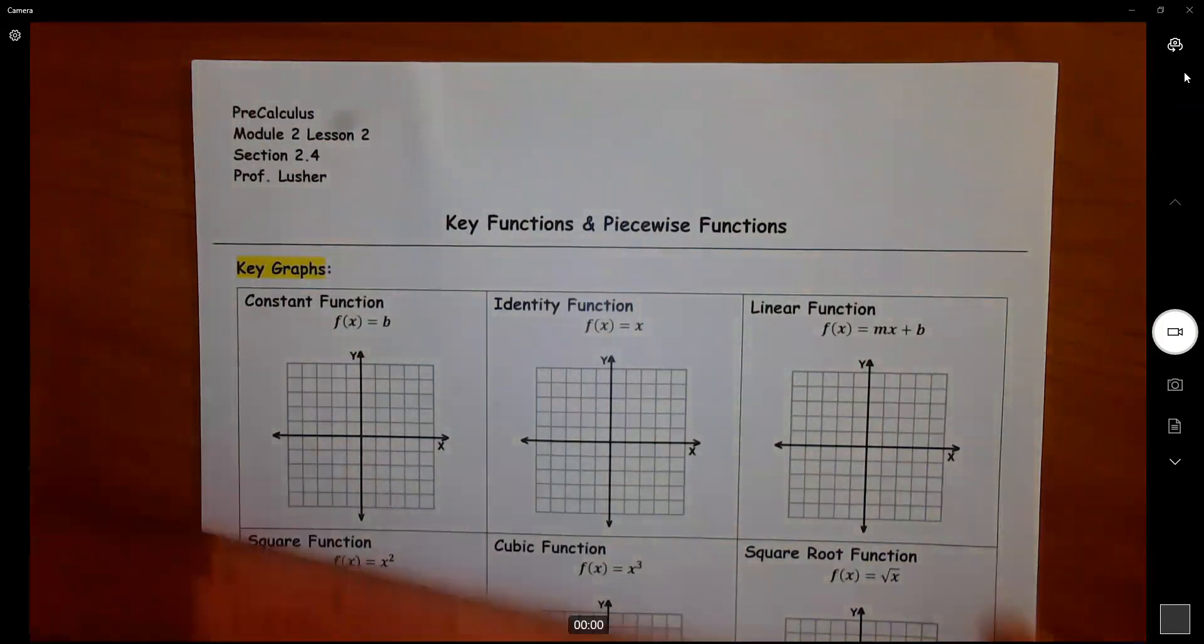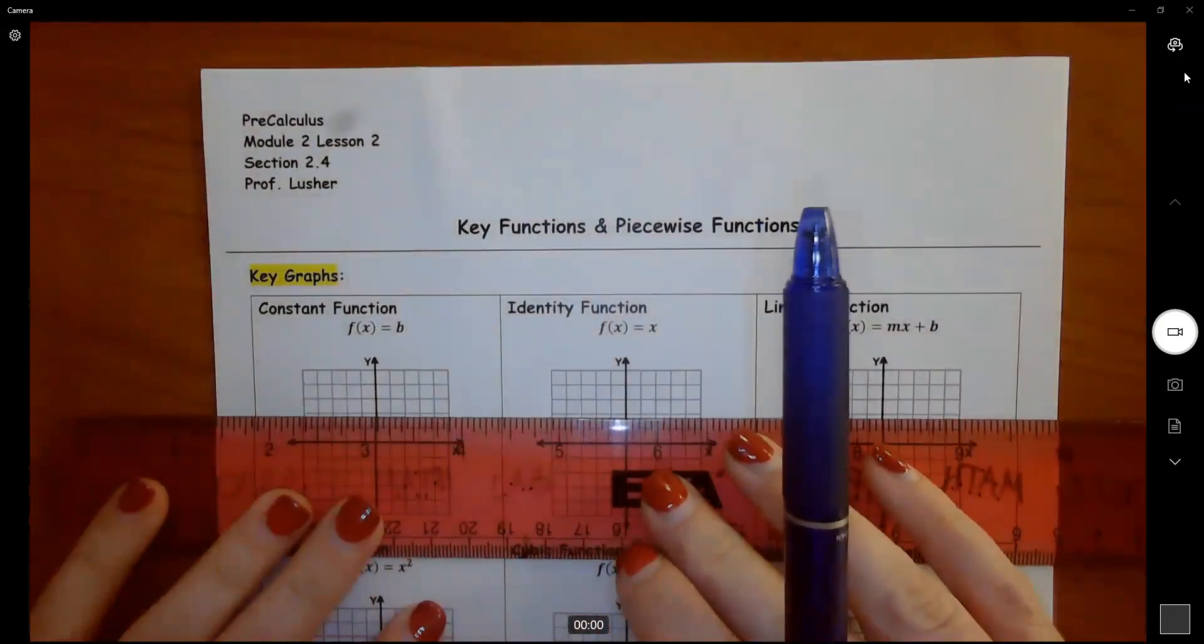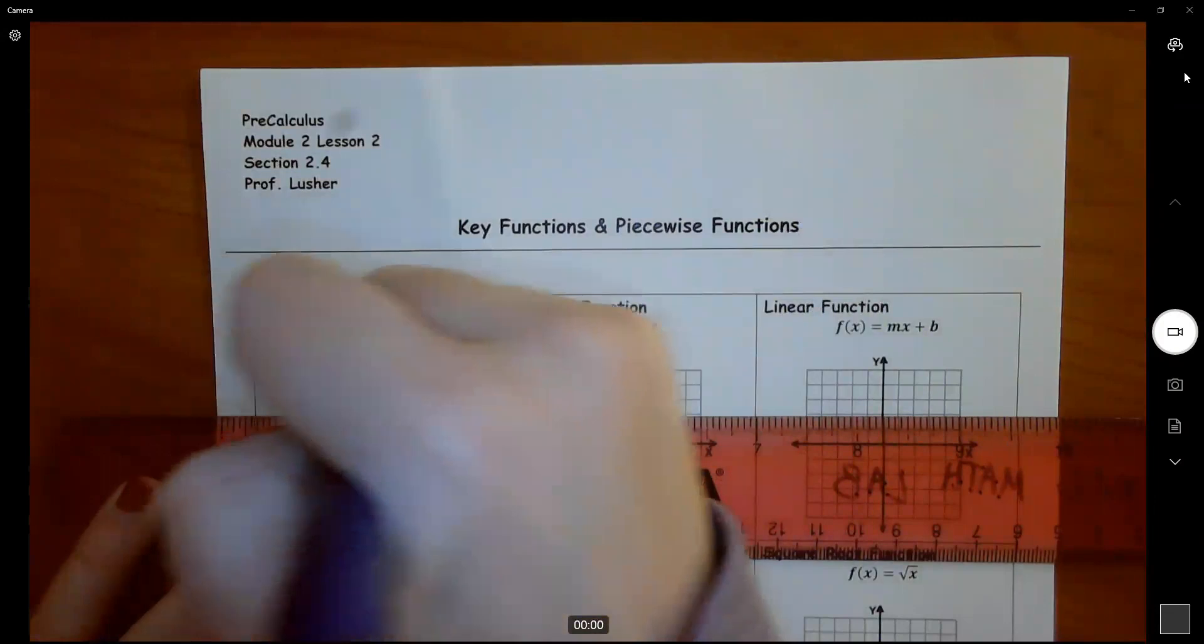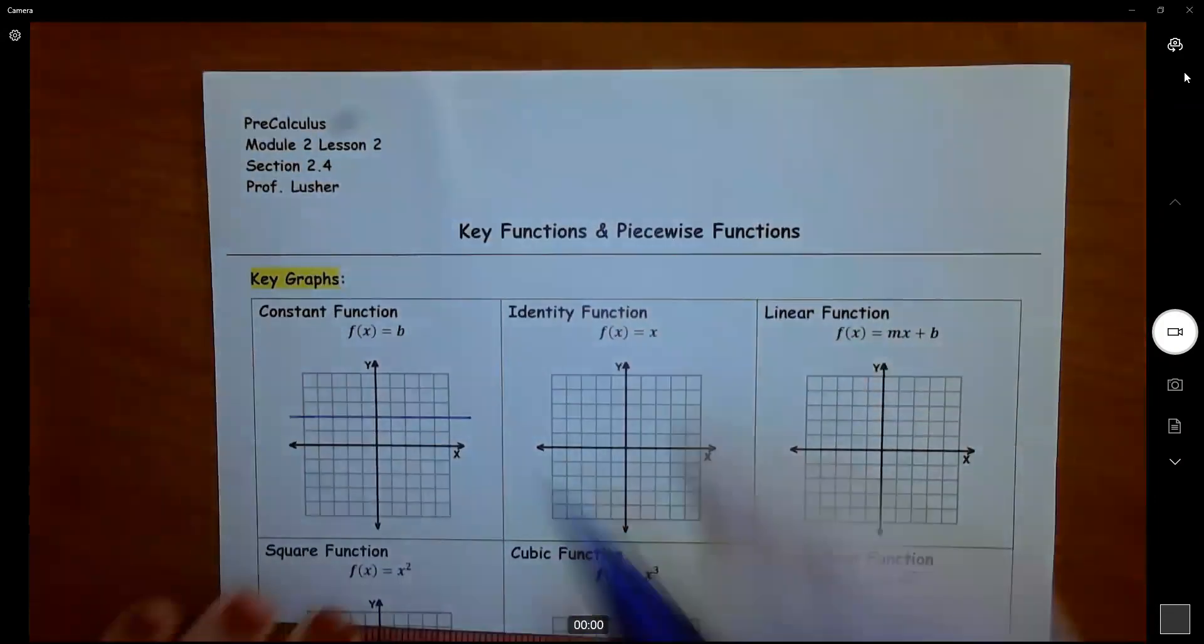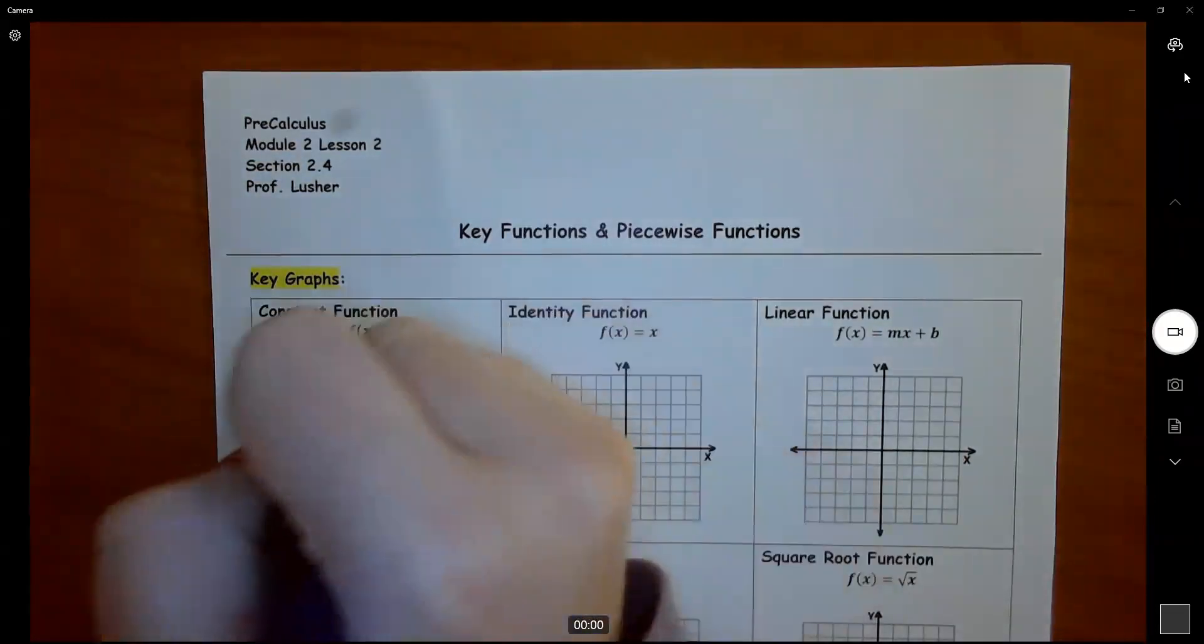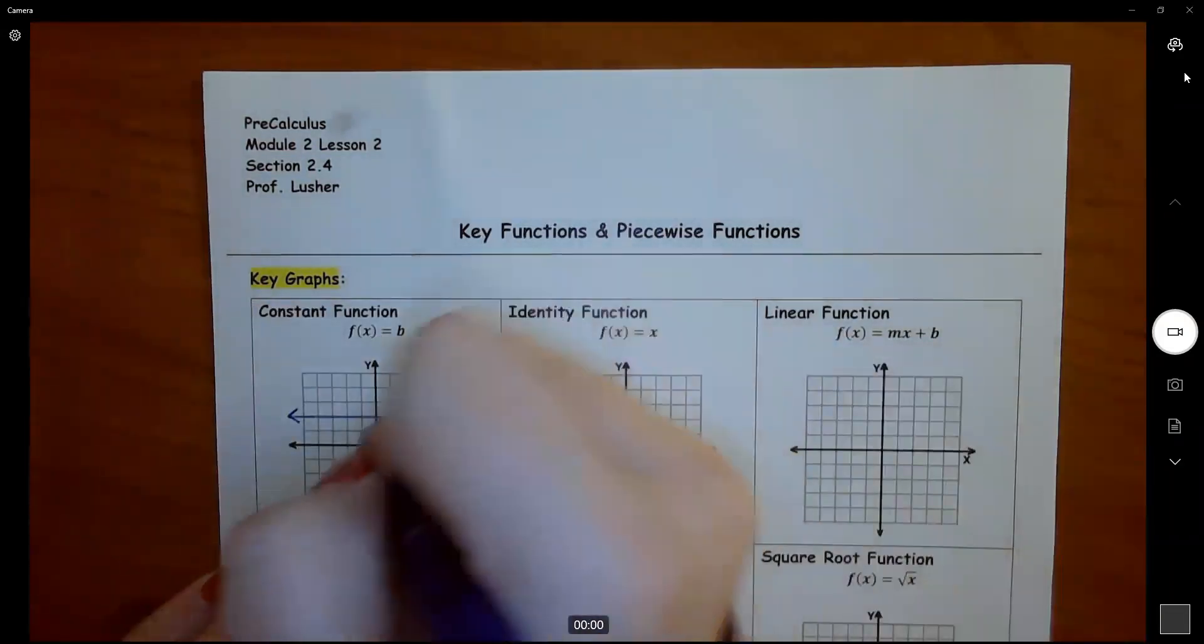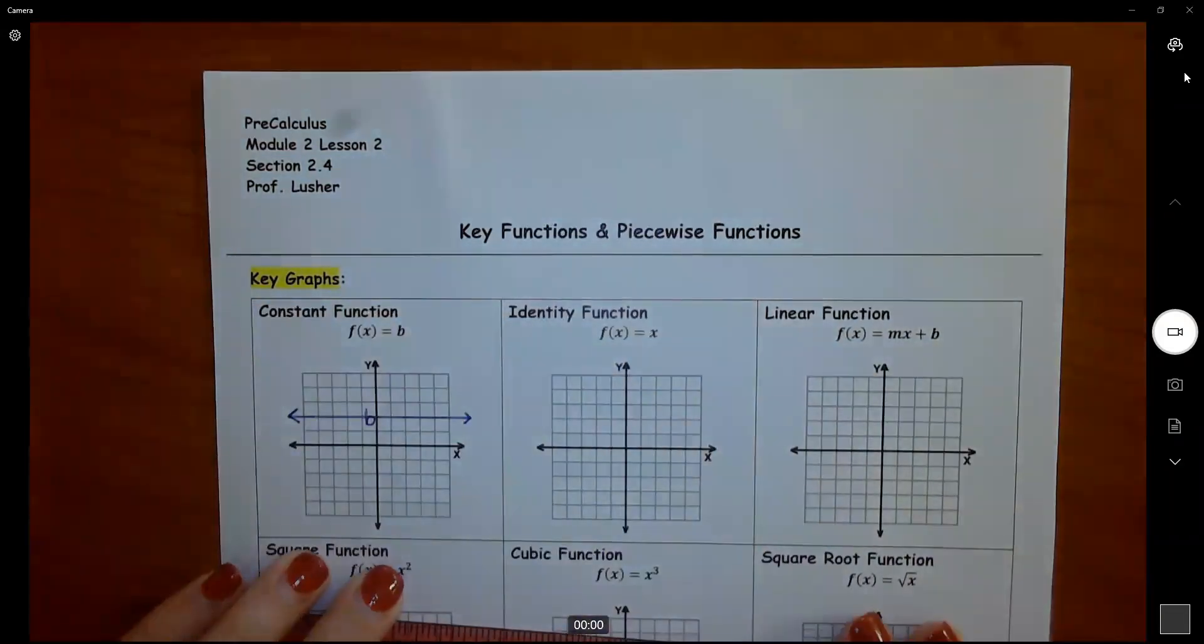So if you have a constant function, what this means is that we have a horizontal line where whatever that b is, that's what it's going through on the y-axis.